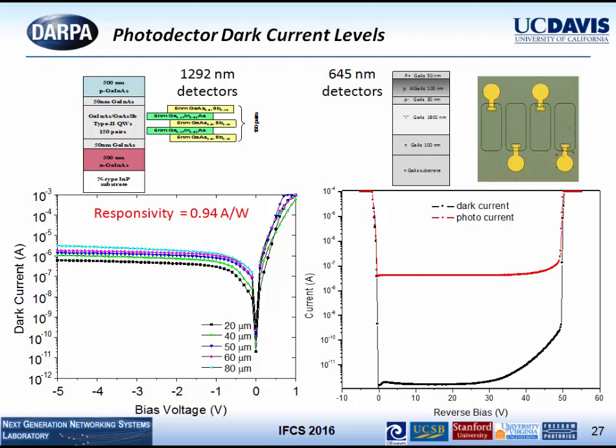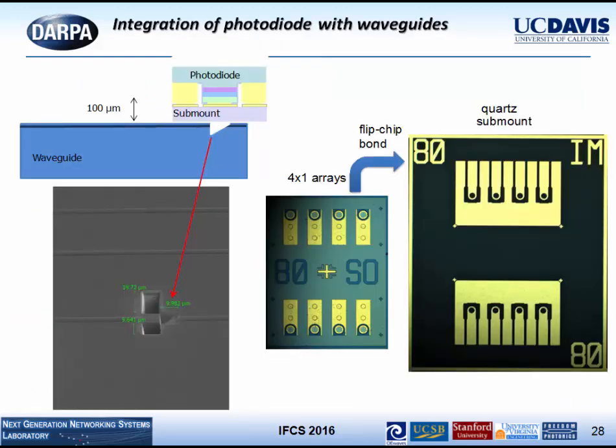One advantage of going with 2F-3F — Stanford has looked into this — is that the 645 nm detector has orders of magnitude lower dark current than longer wavelength detectors, because dark current goes like e^(−E_bandgap / kT). Of course you have to work harder to generate enough 3F beat signal. The detectors will be mounted vertically on top of the silicon nitride waveguide with a deflector for mode matching, and electrodes aligned for passive alignment to achieve high coupling.